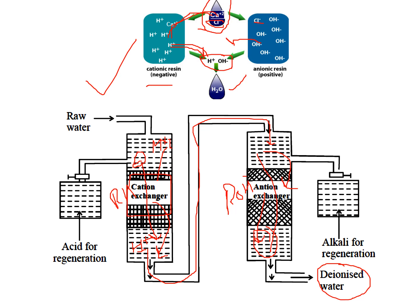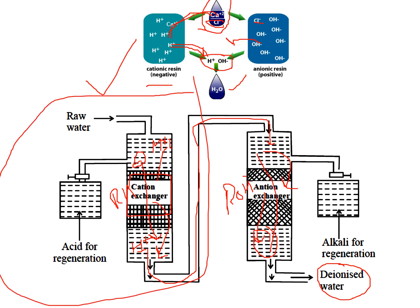The H⁺ and OH⁻ ions combine to form water, producing deionized water. There are no remaining ions, which is why this water is called deionized water. If you compare with the zeolite process, that is only half of this process — only cations are exchanged. Here in the first half, H⁺ ions replace Mg²⁺ and Ca²⁺, just like in the zeolite process.